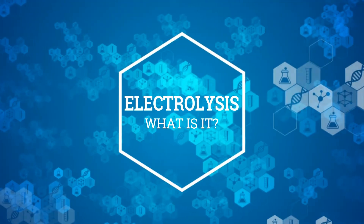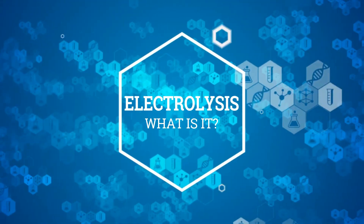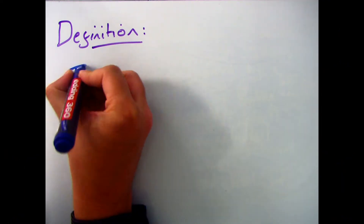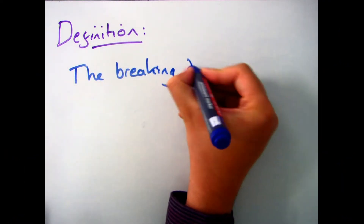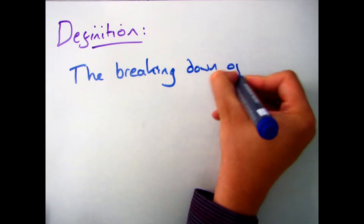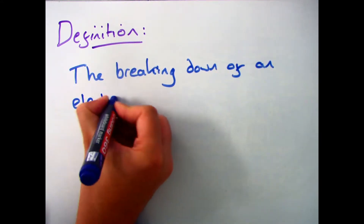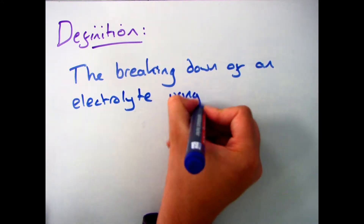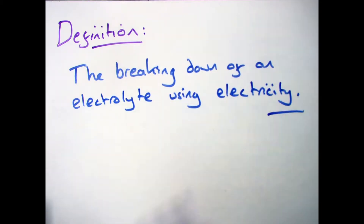Hi guys, welcome to this video which is going to be focusing on what electrolysis is. Electrolysis — the definition is the breaking down of an electrolyte using electricity. We'll have a look at that definition and break it down into smaller chunks so you can see exactly what electrolysis is.